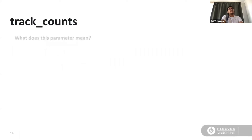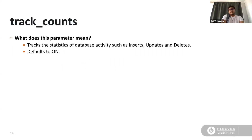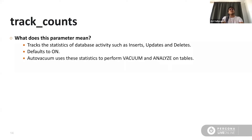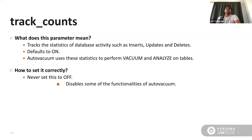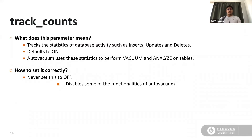Track counts is set to on by default, as is auto vacuum. When track_counts is set to on, activities such as inserts, updates, and deletes are all counted and tracked. Those statistics are used by the auto vacuum process to queue vacuum and analyze workers for specific tables — determining which tables need to go through a vacuum and which need an analyze — all based on the tracked statistics.